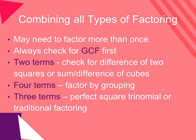If there are only two terms in your problem, it could either be the difference of two perfect squares, or the sum or difference of two perfect cubes. If you have four terms in your polynomial, you could factor by grouping. If there are three terms, it could be a perfect square trinomial or traditional factoring. Always, always look for a greatest common factor before you begin your factoring process.